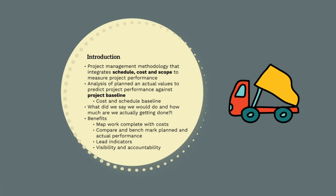Basically, through EVM we'll compare what we planned on doing against what we are actually doing. It helps us to map works complete with costs, compare and benchmark planned and actual performance, identify lead indicators that flag problems early and allow us to put in place corrective plans and actions, and provide visibility and accountability.